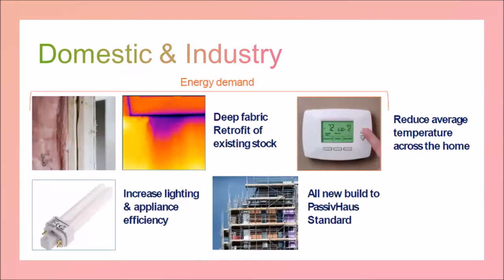For domestic and industry — essentially the same — the model advocates a deep fabric retrofit of existing stock. It says 10% of properties that currently exist should be reduced to a medium level of about half current energy consumption, but 80% need a deep retrofit to actually 25% of what we're currently using in our properties — a huge target. The model also advocates that all new builds are to a passive house standard, and lighting and appliance efficiencies are increasing.